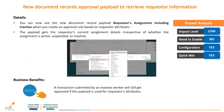New document records approval payload to retrieve requester information: suppose a worker submits an approval and in the meantime resigns. The transaction will now complete even when the worker is inactive, based on the requester's attributes. Even if the requester's assignment is in inactive status, the approval rules will remain. The key business benefit is that this adds seamless approval management flow to cater to business needs.